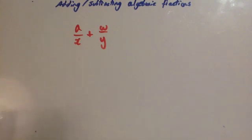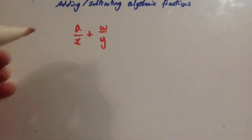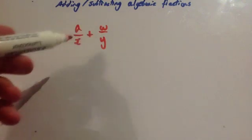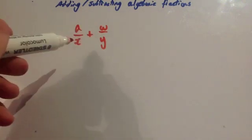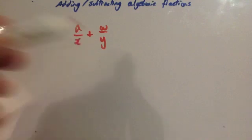Once you get them to have the same denominator, you've just added and subtracted the numerator, depending on what the sign is, and then at the end you cancel it down. So I can't add these at the minute because they don't have the same denominator — this one's got the denominator of x, this one's got the denominator of y.